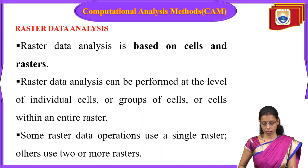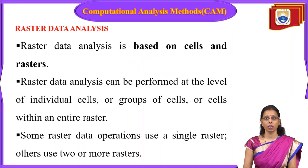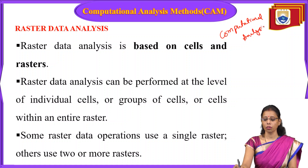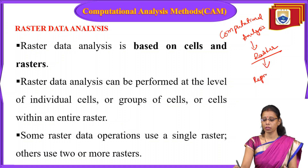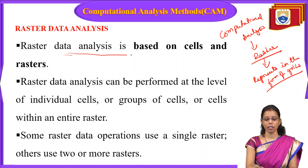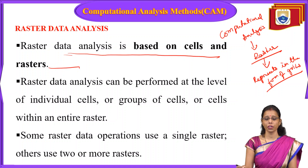Let us discuss raster data analysis. Raster data is data which represents in the form of grid cells. Raster data analysis is based on the cells in the raster. In computational analysis, the system itself provides the data or DN numbers and converts it to a digital format. Each form of the image will be converted to a pixel.